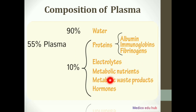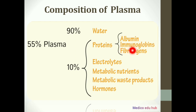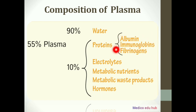Now, if we talk about proteins, there are three types of proteins: albumin, immunoglobulin, and fibrinogen. These are also called plasma proteins. These proteins play a very important role in our body, which we will study on the next slide.